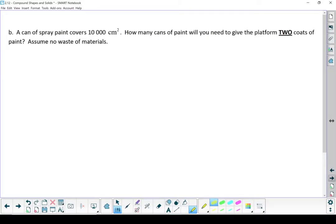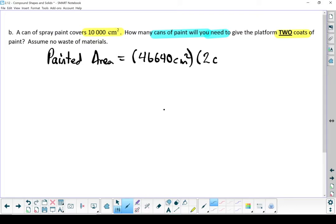Part B, because you knew we weren't done. So a can of spray paint covers approximately 10,000 square centimeters. How many cans of paint do we need to give this platform two full coats of paint? Important information: a can of spray paint covers 10,000 square centimeters, and we need two coats of paint. Let's look at how much area we need to paint. One coat would take 46,640 square centimeters of paint. But we need to make two coats. If we multiply those together, we end up with 93,280 square centimeters of paintable area.